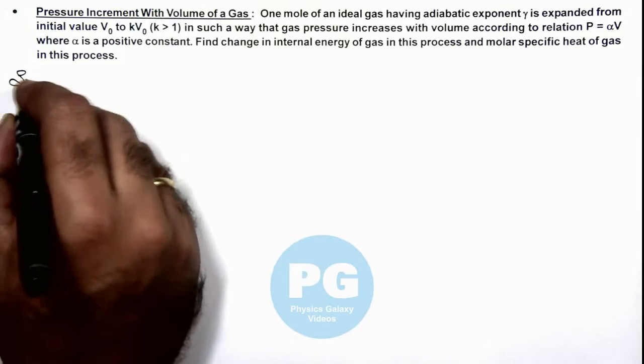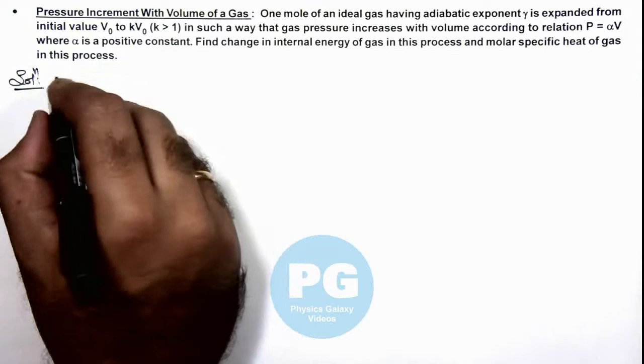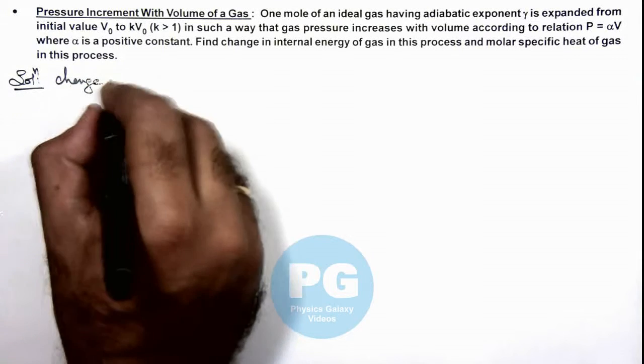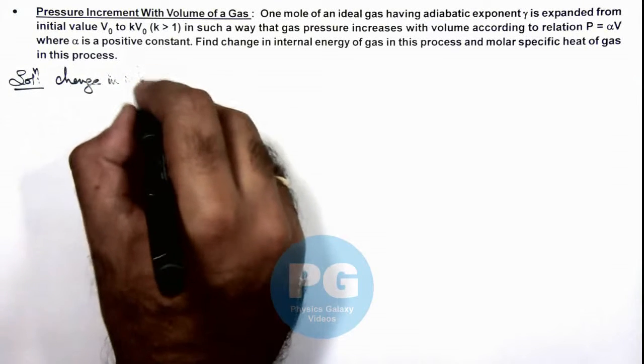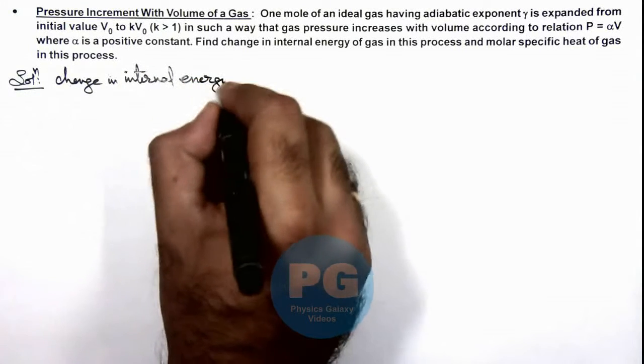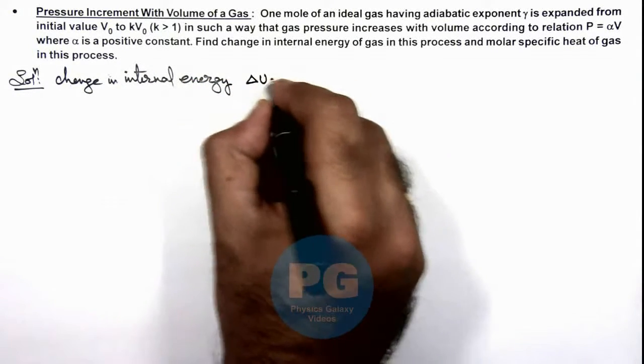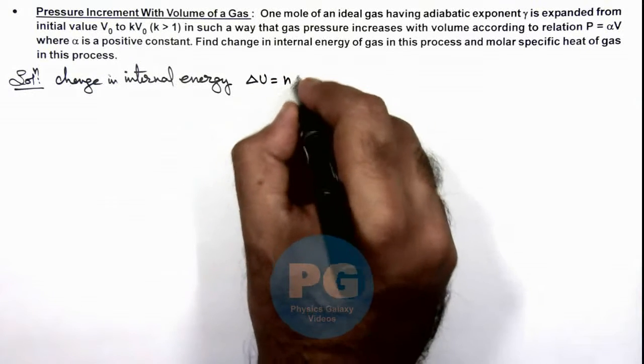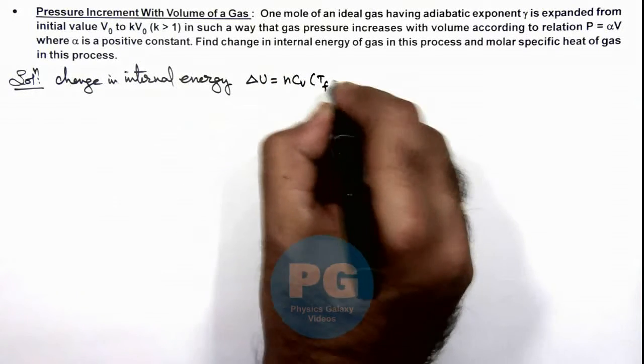So here, we can first write the change in internal energy can be given as ΔU is nCᵥ(Tf - Ti).